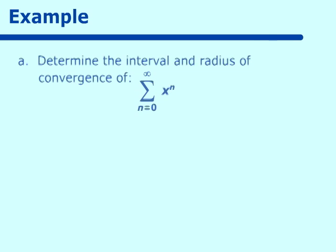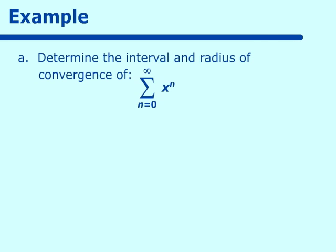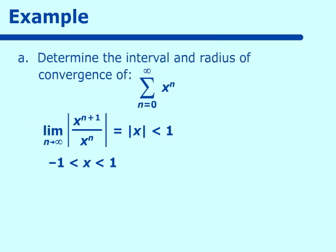Let's do some examples. The first example: we have the sum of x^n. What is the radius and interval of convergence? Using the ratio test, we take the limit as n approaches infinity of the absolute value of x^(n+1) over x^n, which equals the absolute value of x. For convergence, this must be less than 1, so x is between negative 1 and 1.